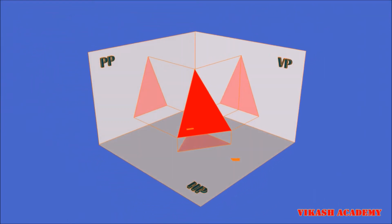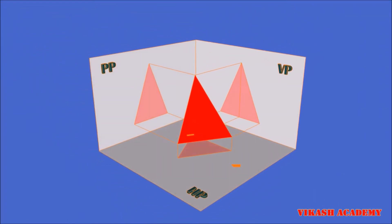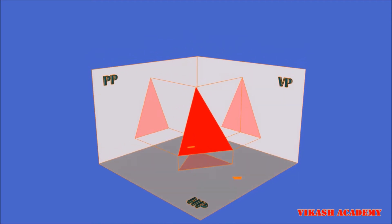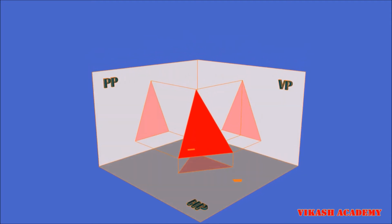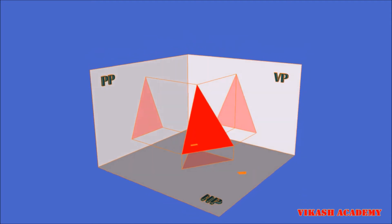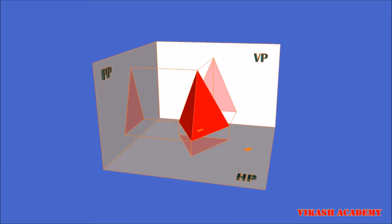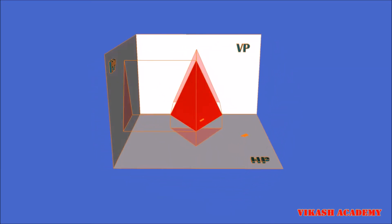As we know, in first angle projection the front view will be obtained on the vertical plane, the top view will be obtained on the horizontal plane, the left hand side view will be obtained on the right profile plane, and the right hand side view